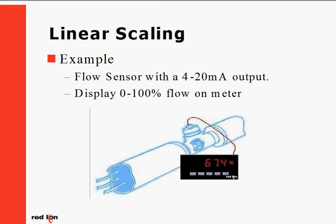Our example shows us having a flow sensor giving off a 4 to 20 milliamp process signal. Our meter then in turn needs to be scaled to read 0 to 100 percent on the display. The following steps will show us how to plug in the proper parameters to successfully scale this meter.